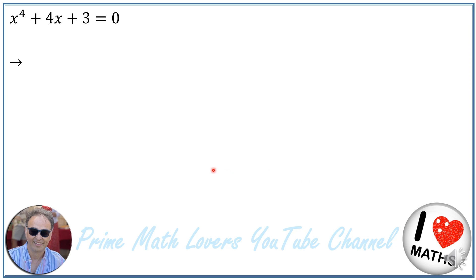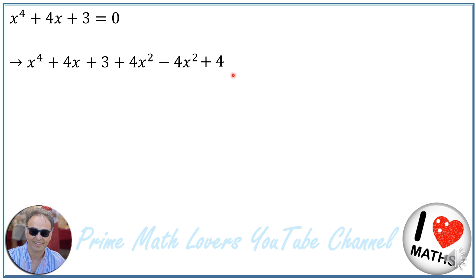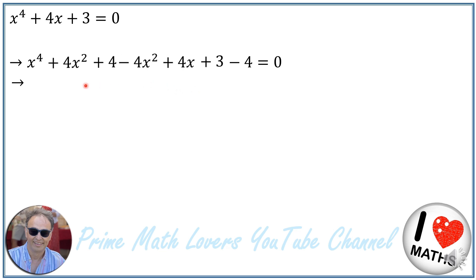First of all, I add plus 4x squared minus 4x squared to the equation, and also plus 4 and minus 4 to the equation, so they don't affect the equation. Then I rearrange the terms and I will have x to the power of 4 plus 4x squared plus 4 minus 4x squared plus 4x minus 1 is equal to 0, since plus 3 minus 4 will be minus 1.